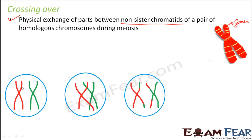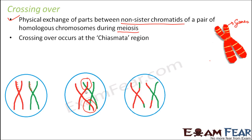Let us suppose inside a cell you have two homologous chromosomes. Here red and green represent a pair of homologous chromosomes. You have genes located on these chromosomes and the corresponding same sequence of genes is located on the other chromosome as well. During the process of meiosis, during prophase 1, chiasmata formation takes place. The homologous chromosomes start pairing up and these are the sites of crossing over. This X-shaped structure is known as chiasmata, and crossing over occurs at the chiasmata region.